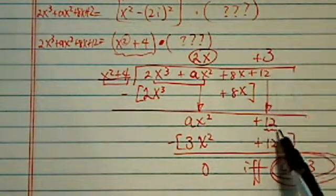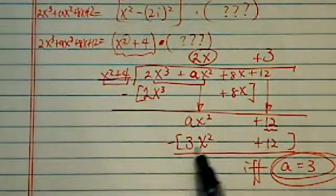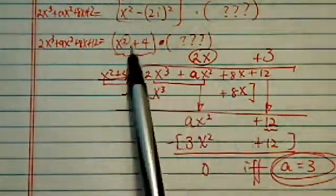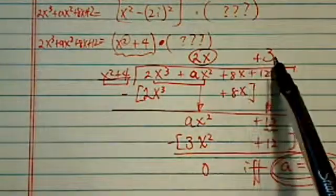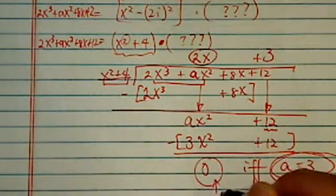In order to match the 12, 3 times 4 is 12. 3 times x² is 3x². Since I know this is a complete factor, then this a has to be 3 for my remainder to be 0.